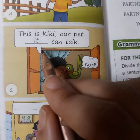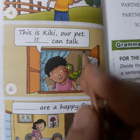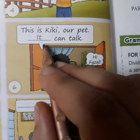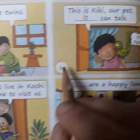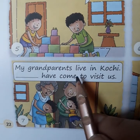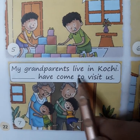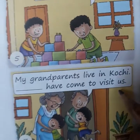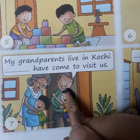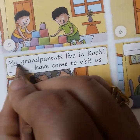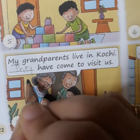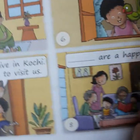'This is Kiki, our pet. It can talk.' Kiki is a bird, so we use 'it' — that's already done. Next: 'My grandparents live in Kochi. Dash have come to visit us.' Grandparents means more people, so we write 'they'.